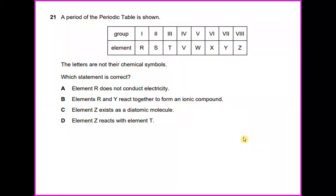A period of the periodic table is shown with group 1 and group 8 and elements R through element Z. The letters are not their chemical symbols. Which statement is correct? Rubidium represents group 1 and bromide is coming from group 7. So rubidium and bromide react together to form an ionic compound. So the answer for number 21 is B.